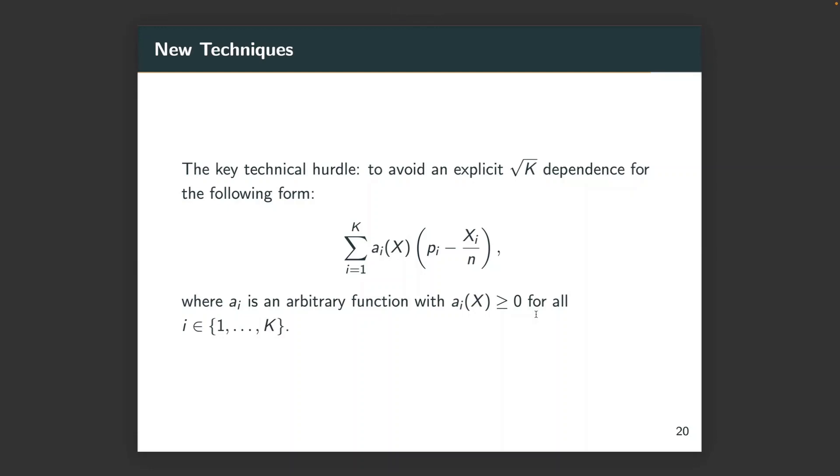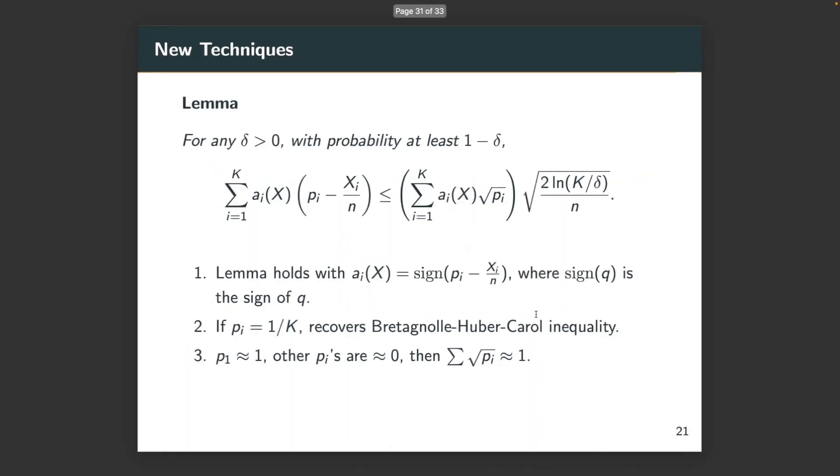At the end of this talk, I want to briefly talk about our new technical contribution, which could be of its own interest. The key technical hurdle is to avoid an explicit square root K dependence for the following form, where A_i is a non-negative function. Traditional bounds like Bernstein-Hoeffding-Chernoff inequality will have square root K dependence, but we use this key lemma. When p_i is approximately 1 over K, we recover BHC inequality. But when all the weights are on a specific i, such as p_1 equals 1 and other p_i equals 0, then we have sum over square root p_i is approximately 1. Our results interpolate across cases.